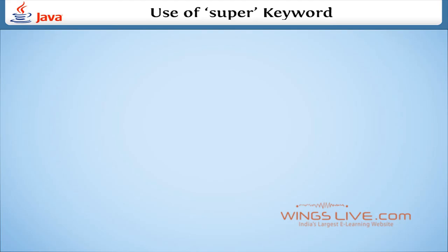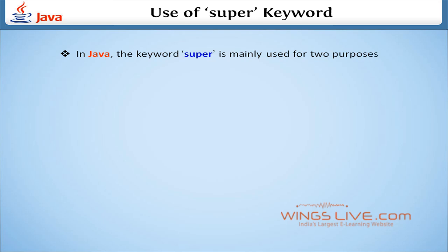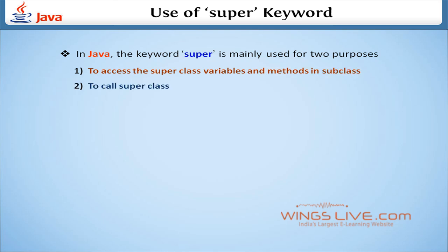In this lesson, we are going to discuss the keyword super in Java. The keyword super is mainly used for two purposes: first, to access superclass variables and methods in a subclass; and second, to call a superclass constructor in the subclass. Let us discuss them one by one.